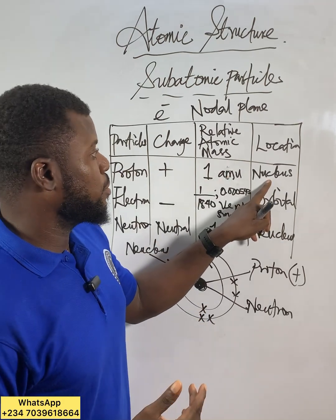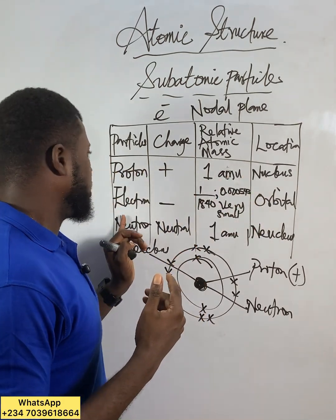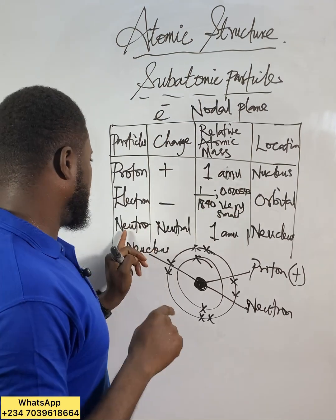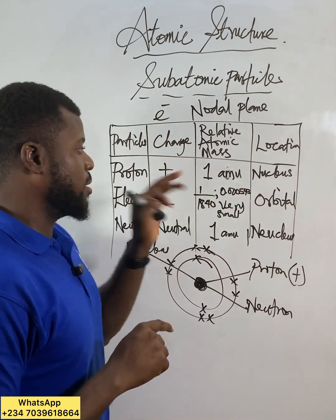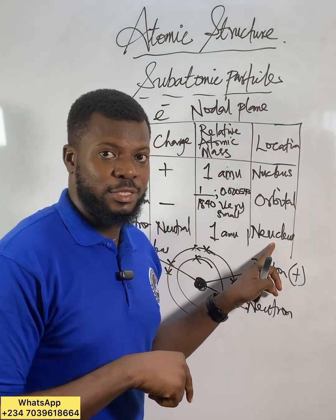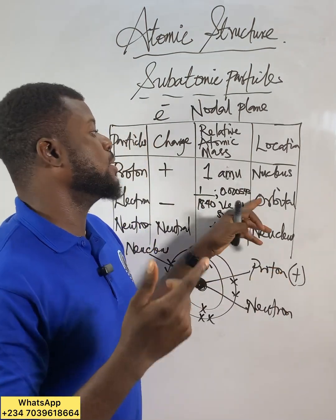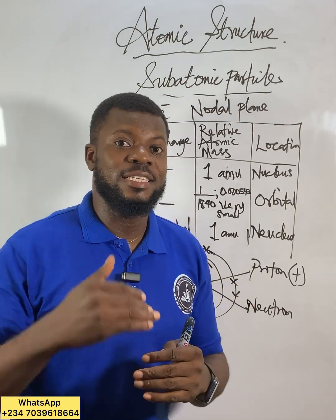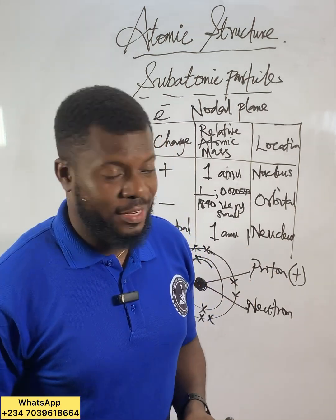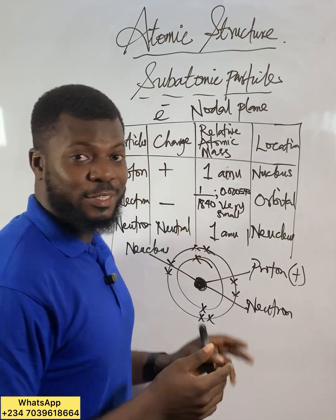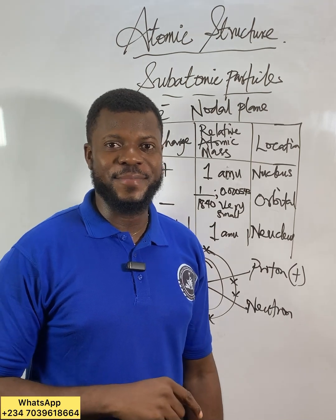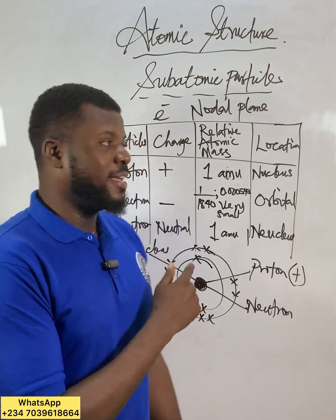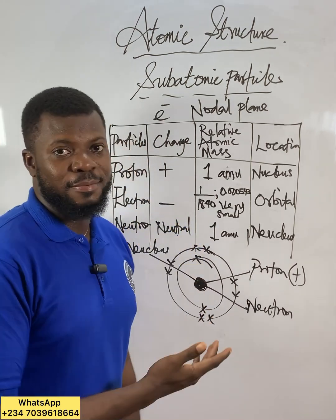If they ask where the proton stays, it is in the nucleus of an atom. If they ask where the electron stays, it is in the orbital. If they ask where the neutron stays, it is in the nucleus of an atom. If they ask what the orbital is, say it is the region in space where there is a high possibility of finding an electron.